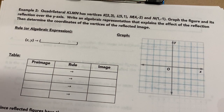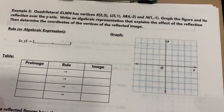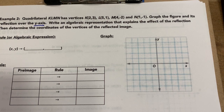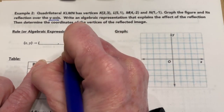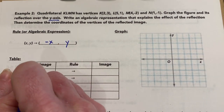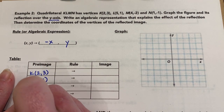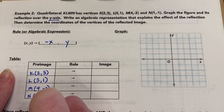In Example 2, quadrilateral KLMN has vertices K(2, 3), L(5, 1), M(4, −2), and N(1, −1). We need to graph the figure and its reflection over the y-axis, write an algebraic representation, and determine the coordinates of the reflected image. Reflecting over the y-axis means y stays the same and x changes to the opposite.